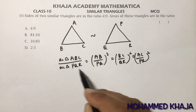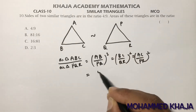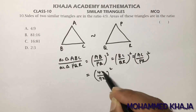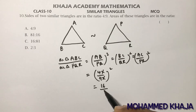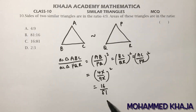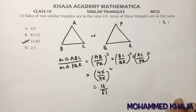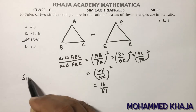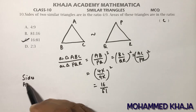They're asking for the area; the sides are given. Take 4x and 9x as corresponding sides. Squaring: (4x/9x)² — x cancels — 4² is 16, 9² is 81, so 16:81. The correct option is C.